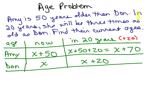So the key is that in 20 years, we're talking about look at this column. We're talking about their ages in 20 years that she'll be three times as old as Don.